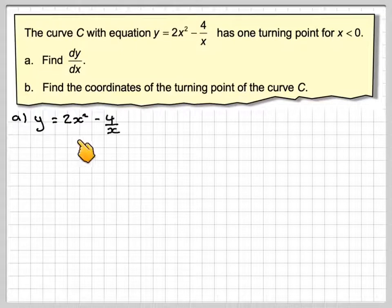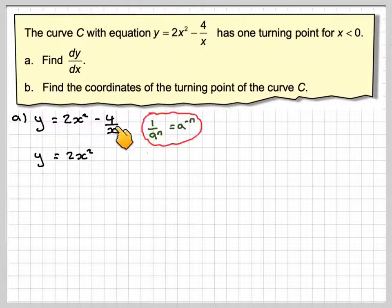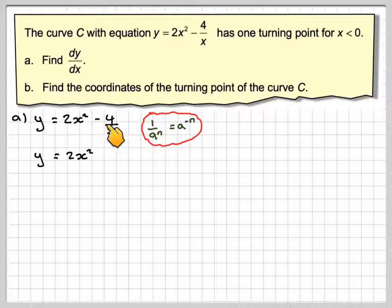If we've got y equals 2x squared minus 4 over x, before we can differentiate, we need to deal with this term. We know that 1 over a to the n is a to the minus n, so we can rewrite this as minus 4x to the minus 1 using this rule.